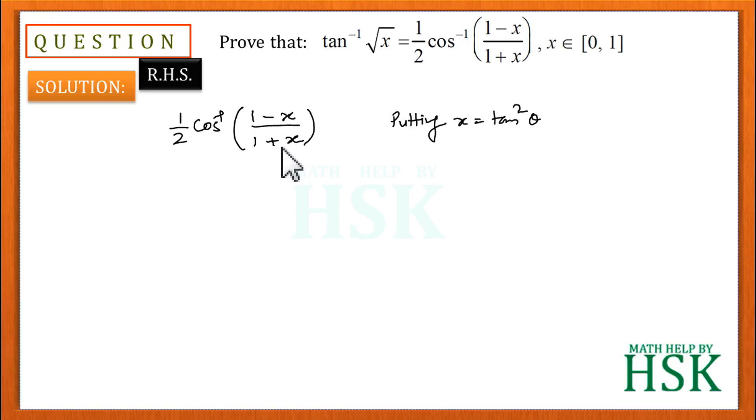will simplify my expression (1 minus x) upon (1 plus x). Let us see how it is going to be simplified. First of all, on placing x equal to tan square theta, I get this equal to 1/2 cos inverse of (1 minus tan square theta) upon (1 plus tan square theta), which equals cos 2 theta.